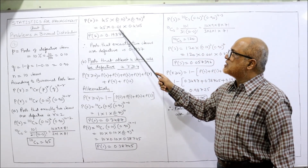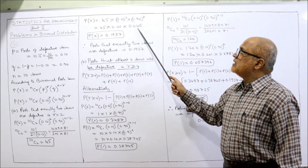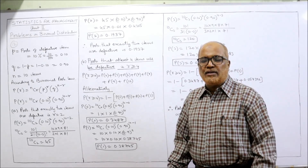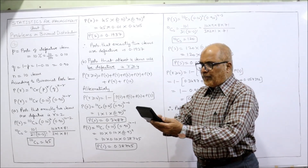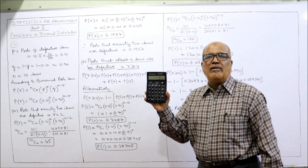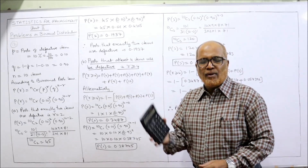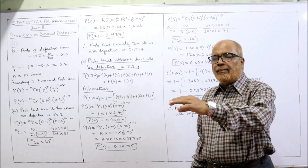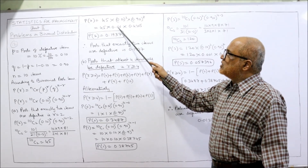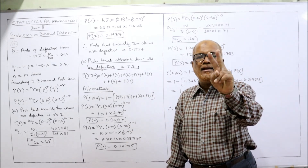So P(2) = 45 × 0.01 × (0.9)^8. To compute (0.9)^8: 0.9² = 0.81, then 0.81² = 0.6561 (4 times), then 0.6561² ≈ 0.4305 (8 times). Multiplying 45 × 0.01 × 0.4305 gives 0.1937. So the probability that exactly 2 items are defective is 0.1937.